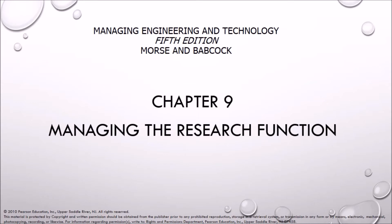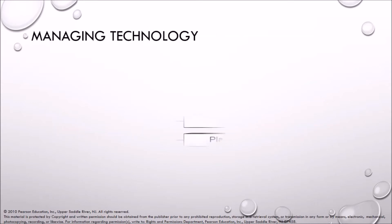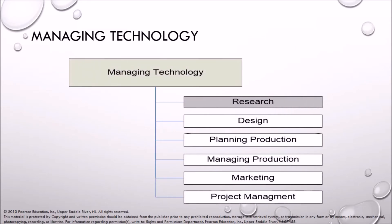Chapter 9: Managing the Research Function. Managing technology is divided into research, design, planning production, managing production, marketing, and project management. In this chapter we will be discussing managing research function.